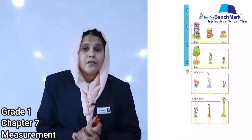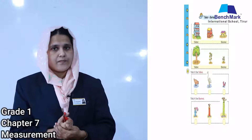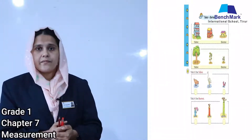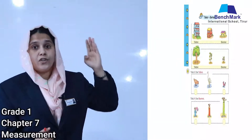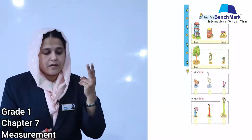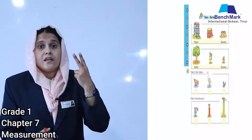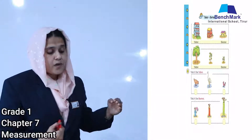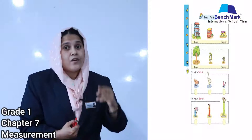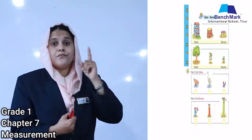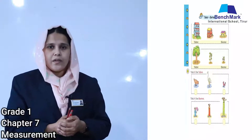They have also given three objects and you have to tick the tallest object. Turn to page number 96 — tick the tallest bird. Yes, the second one, the ostrich, is the tallest — tick that ostrich. Then tick the shortest joker: the first joker is the shortest, so tick that one.